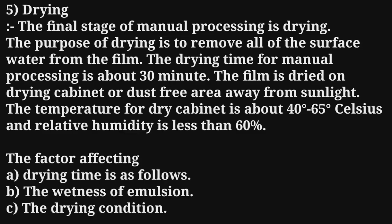The fifth and final step of manual processing is drying. The purpose of drying is to remove all surface water from the film. The drying time for manual processing is about 30 minutes. The film is dried in a drying cabinet or a dust-free area away from sunlight. The temperature of the drying cabinet is about 40 to 65 degrees Celsius.